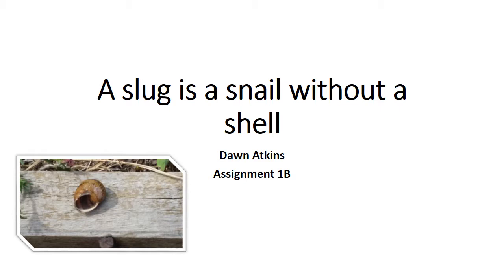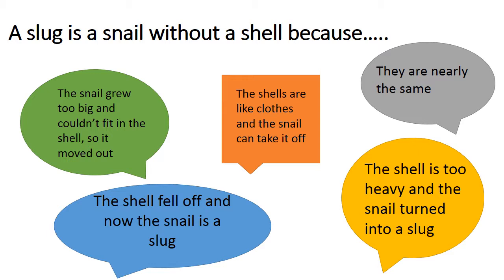For this investigation, we explored the misconception held by children aged around five to six, and their idea that a slug is a snail without a shell. Some ideas they expressed were that shells were like clothes and the snail could take them on and off. Others felt they were nearly the same animal. Some thought the snail might grow and move out of its shell, that the shell just fell off turning the snail into a slug, or that the shell was too heavy so the snail decided to become a slug.